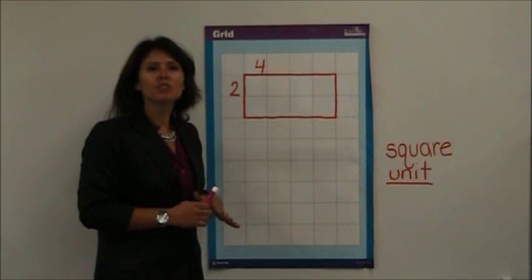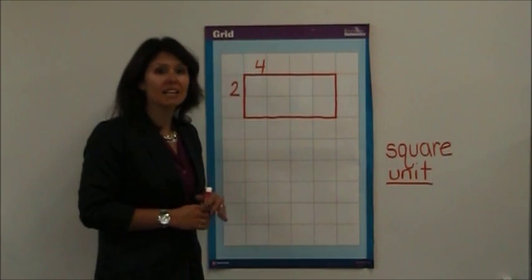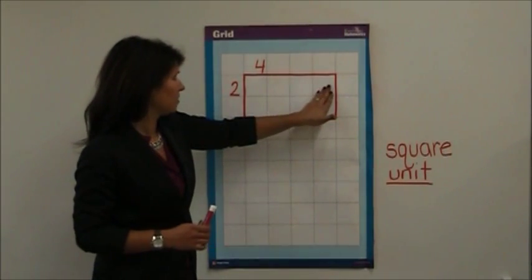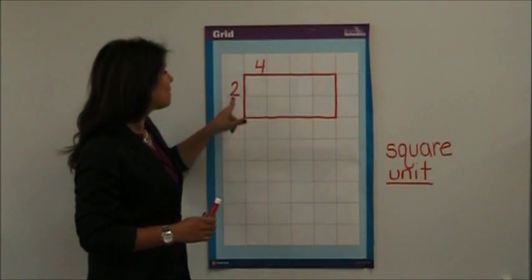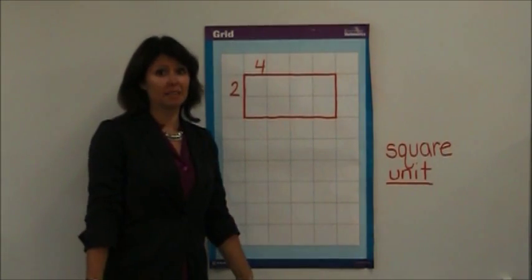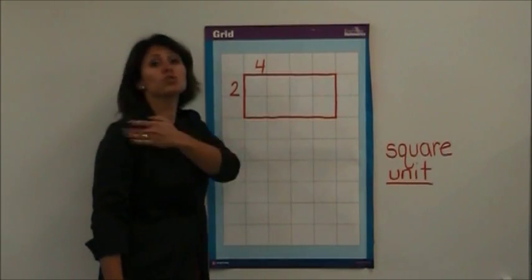Area is the measure of space inside a shape. So we're measuring the inside of this rectangle. Remember that the length is up and down like your height. The width goes across.